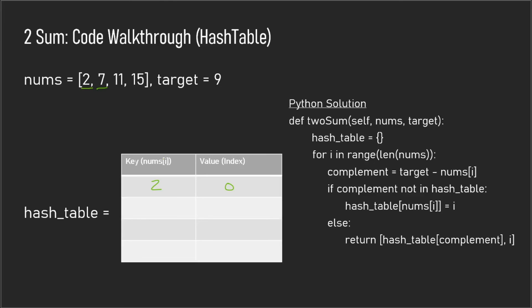We return the value stored in the hash table — which is 0 — and the index we're currently on, which is 1. So the answer is [0, 1]. This one-pass solution has an O(n) runtime and O(n) space complexity. Thanks for watching and I'll see you in the next one.